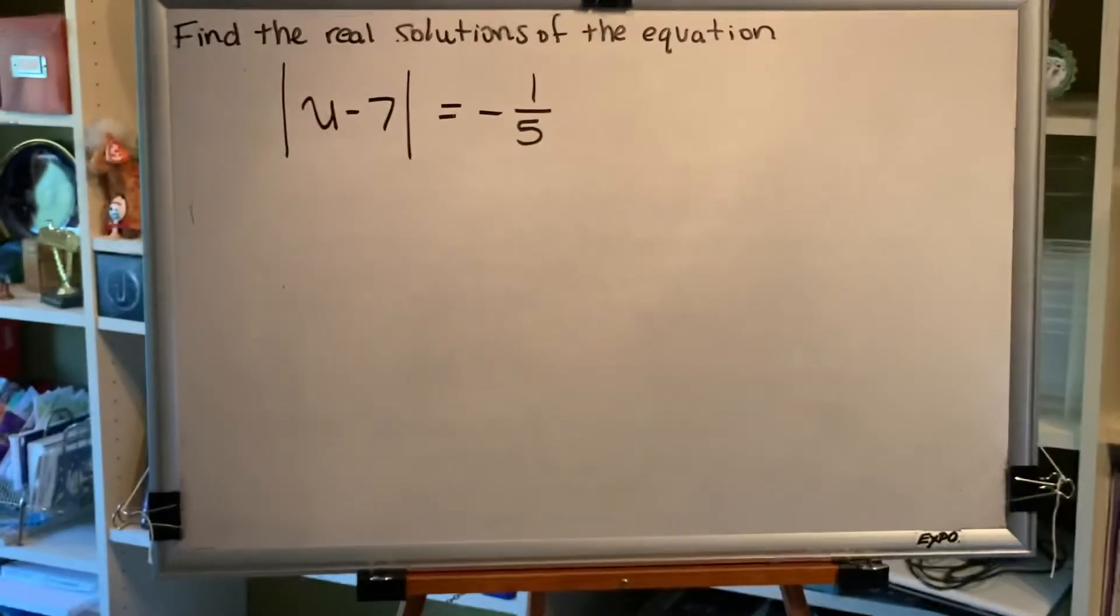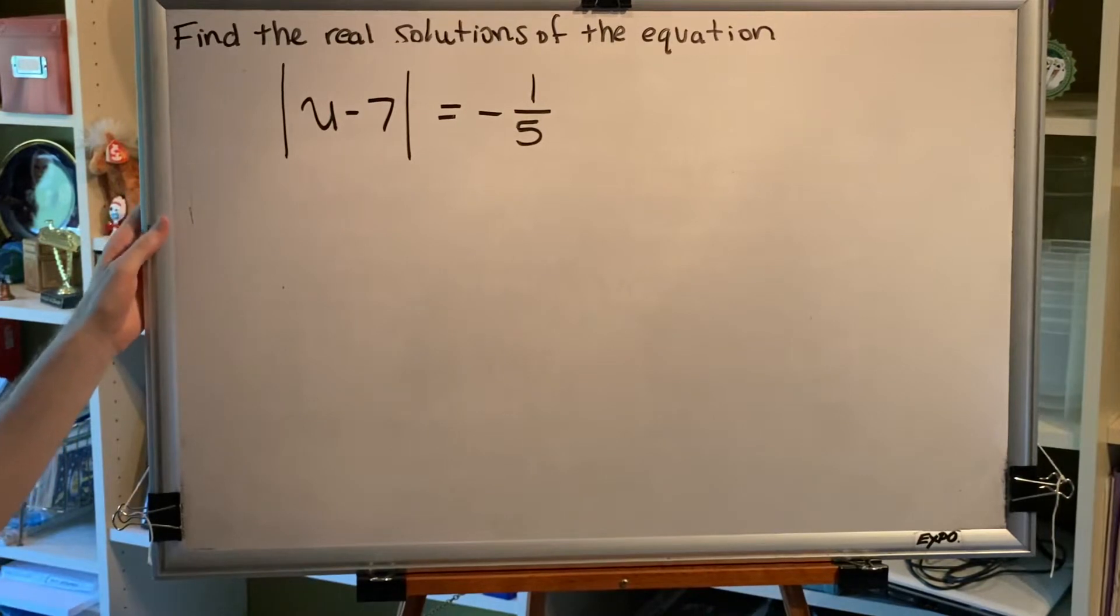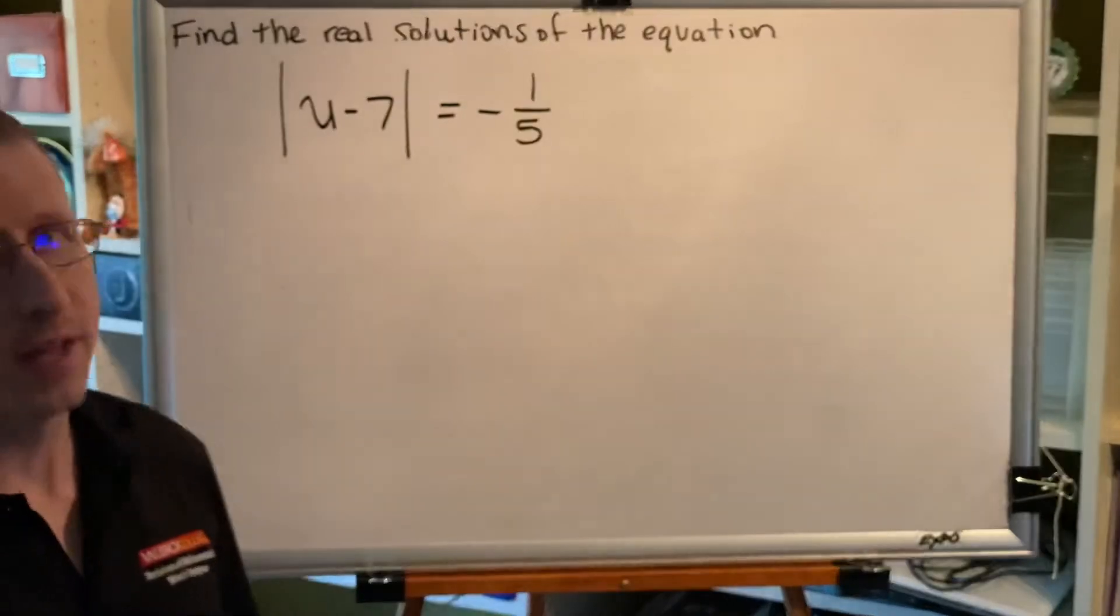The topic of this video is solving absolute value equations. Let's look at some problems. Find the real solutions of the equation. The absolute value of the difference u minus 7 equals negative 1 fifth. Let's go through the steps together.